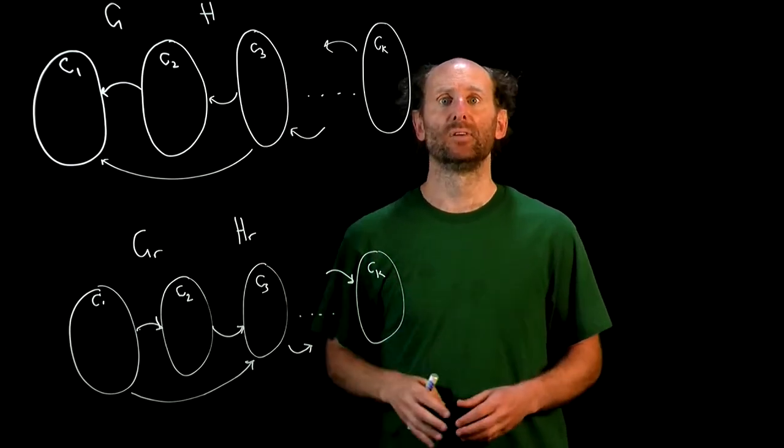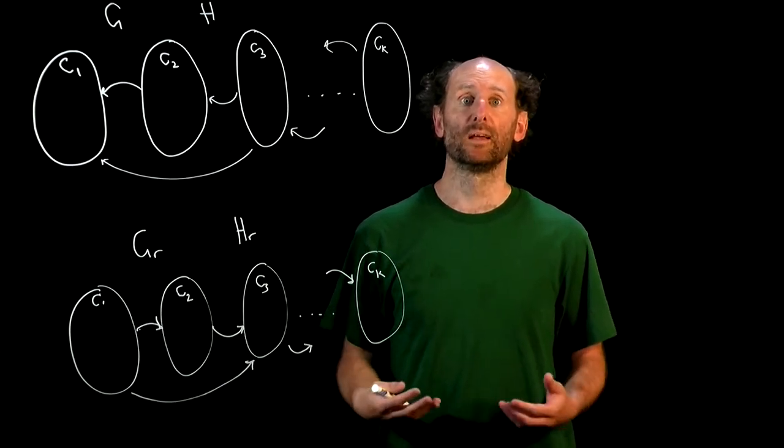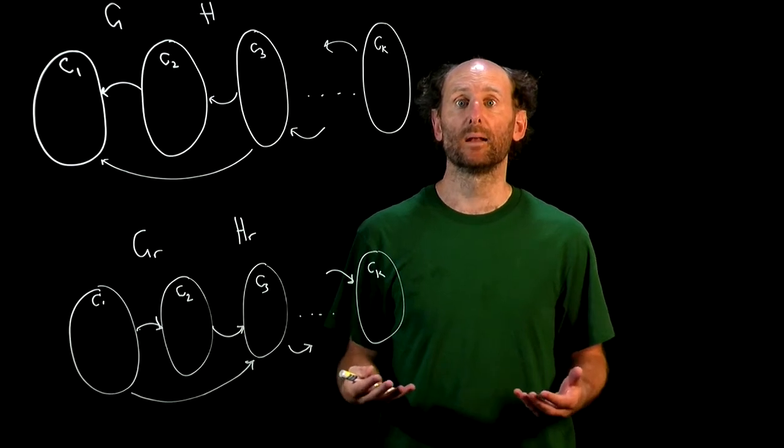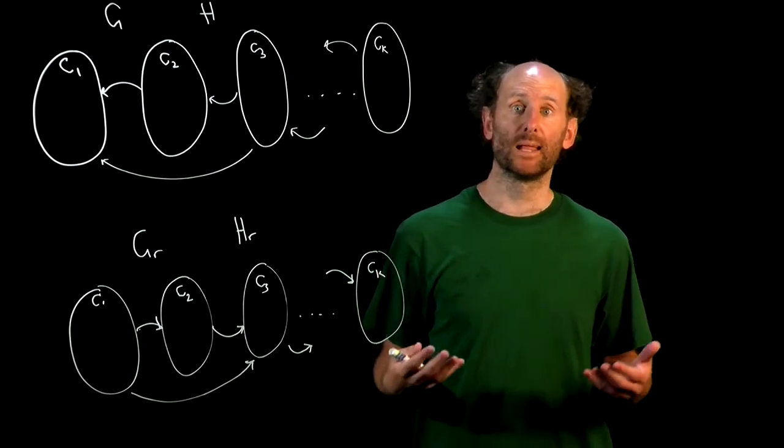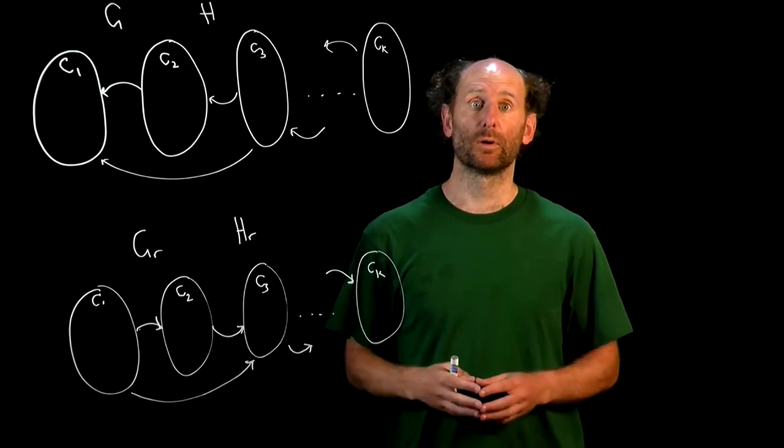Okay, so since H is a DAG, we can find a topological order of H using DFS. Recall that to do that, we simply run DFS on the graph in question and list the nodes in reverse order of done times.